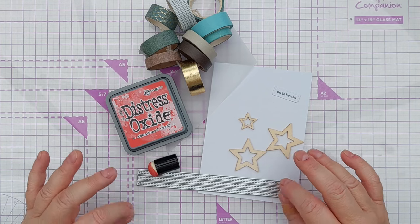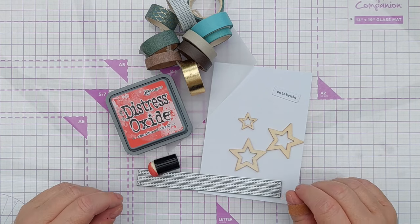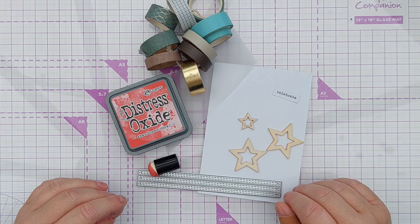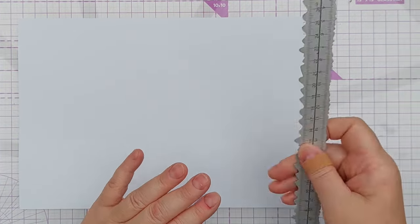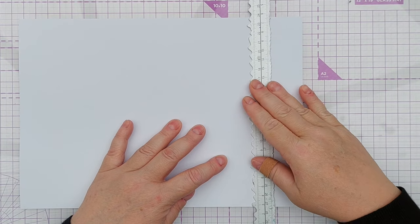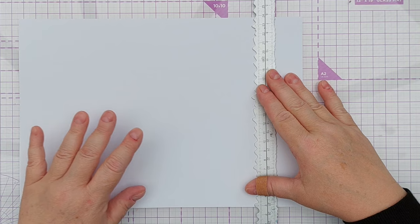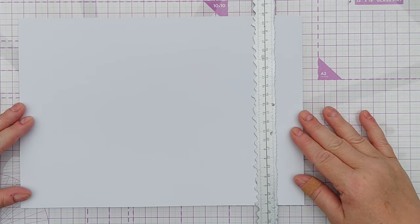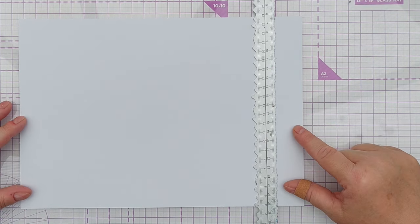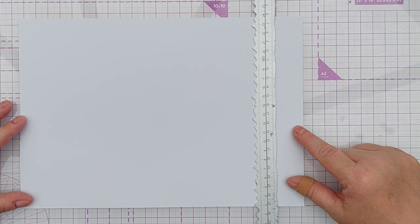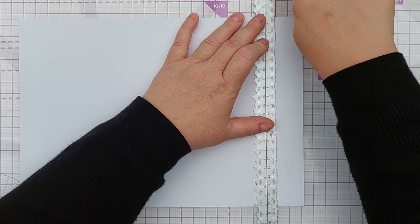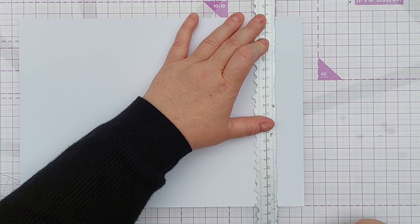The first thing I'm going to do is take my torn edge ruler and create a strip with a torn edge. I've been really enjoying torn edges lately and just a little handy hint: if you've got something with a grid on it like this mat, line your paper up with the grid and then line your torn edge ruler up with the grid. Doesn't have to be perfect, but this just gives you a bit of a chance of getting a perpendicular edge.